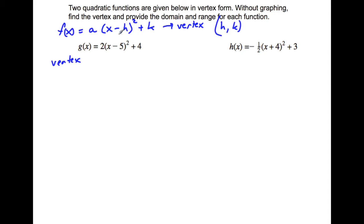Okay, we take the opposite sign for the h, and we keep the sign for the k. So for the vertex for this one, we don't have to worry about this two yet, but the vertex will be the opposite of five. So h equals five, and k, we keep the sign, equals four. So the vertex is (5, 4).